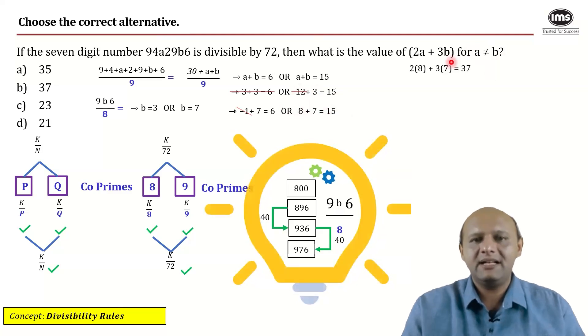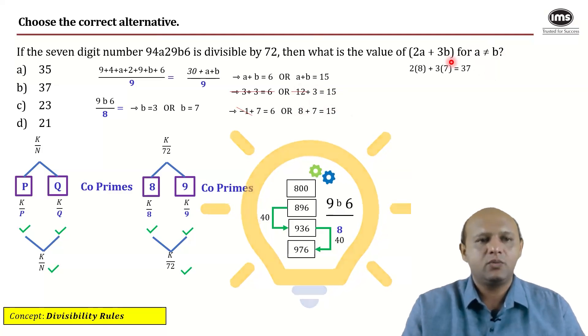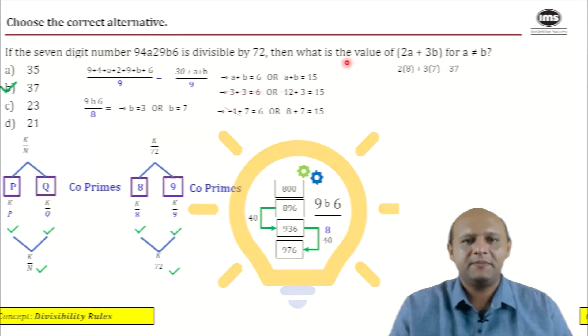And therefore the only possibility here is 8 and 7. So what is 2 times 8? 16. 3 times 7 is 21. 16 plus 21 is 37. 37. So what's the answer? 37. Okay. Let's see.